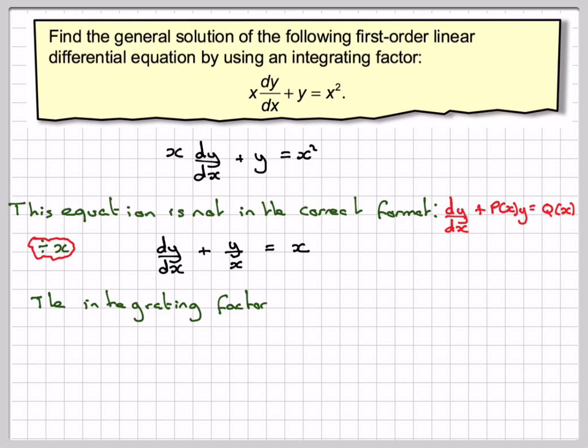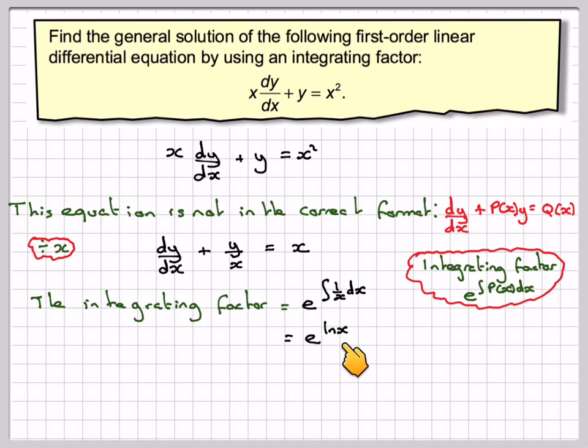Next, the integrating factor will be e to the integral of 1/x dx. Remember, the integrating factor is found by doing e to the integral of P(x) dx, and P(x) is 1/x. If we integrate 1/x, we get ln(x). Now e to the ln(x) simplifies to just x.